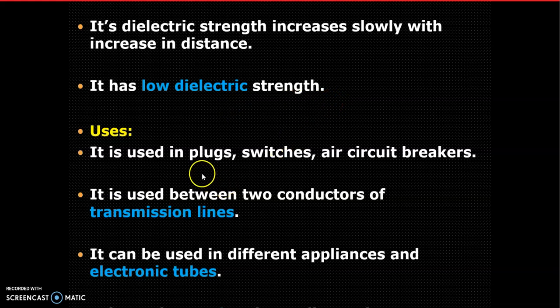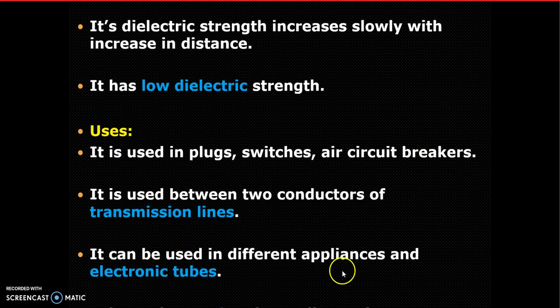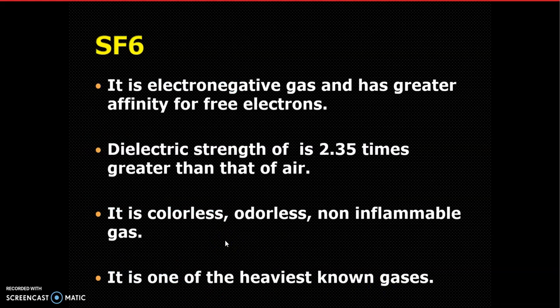Air is used in plugs, switches, and air circuit breakers. It is used between two conductors of a transmission line. It can be used in different appliances and electronic tubes - for example, in fluorescent tubes, gas is used, and depending upon the gas material the color will change. Even in incandescent lamps, air is used as an insulating material - the coil is separated from the glass structure through air.